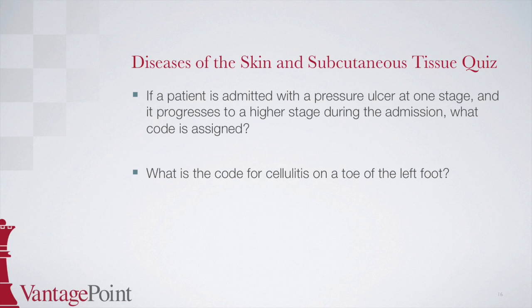The answer to our first question is: assign a code for the highest stage. The answer to the second question is L03.032, cellulitis of left toe. To locate this code, start at cellulitis in the alphabetic index, then find toe indented below. We are directed to code L03.03 with a checkbox indicating more digits are required. When we go to the tabular, there are options for right, left, and unspecified toe. L03.032 is for cellulitis of the left toe.